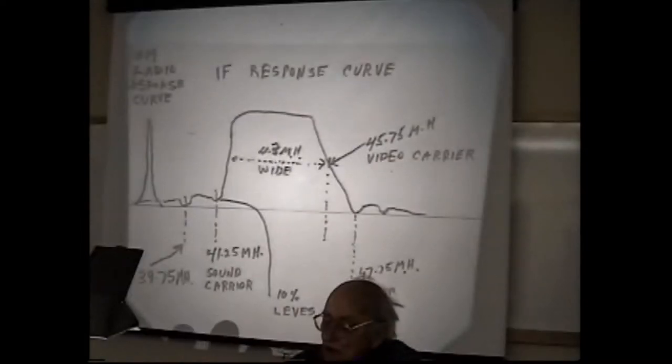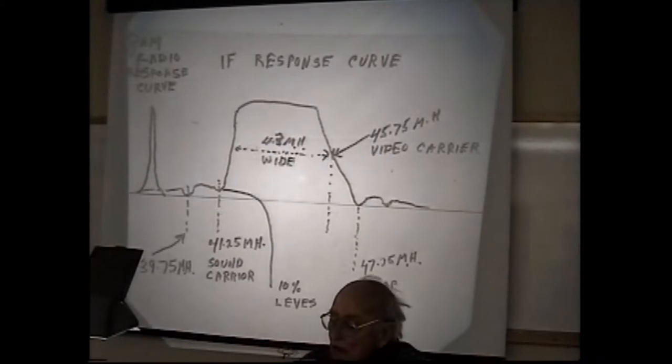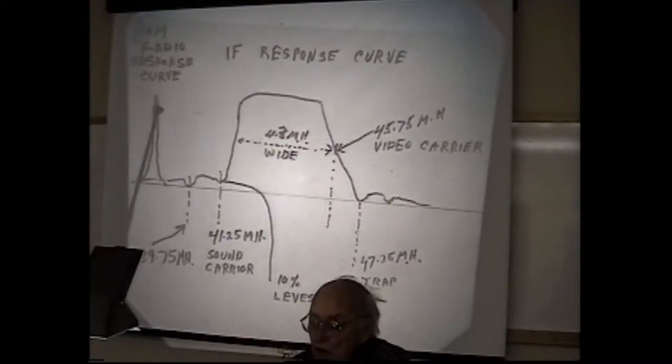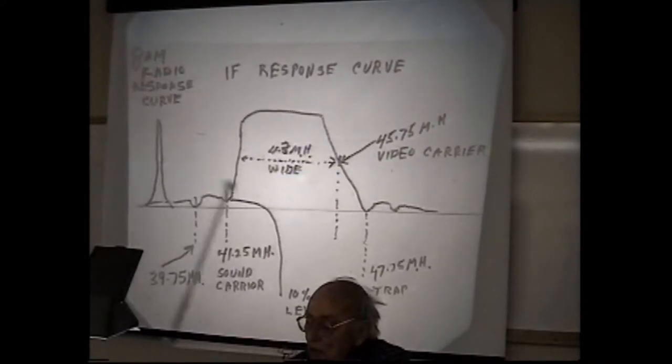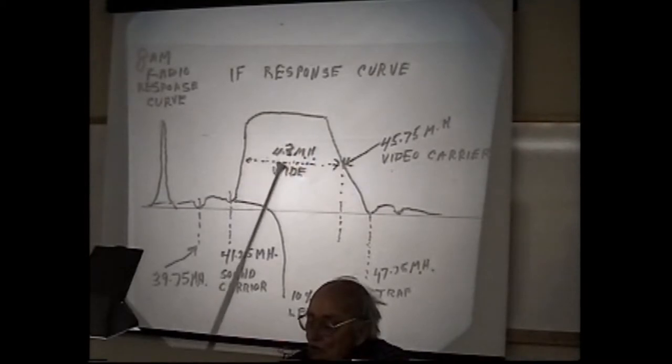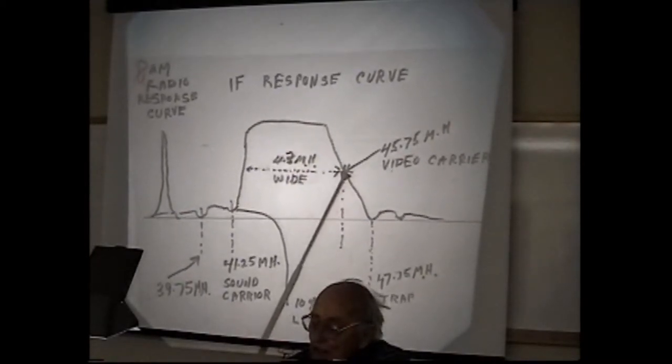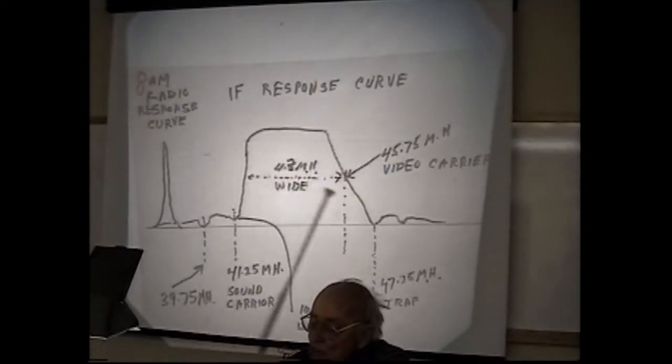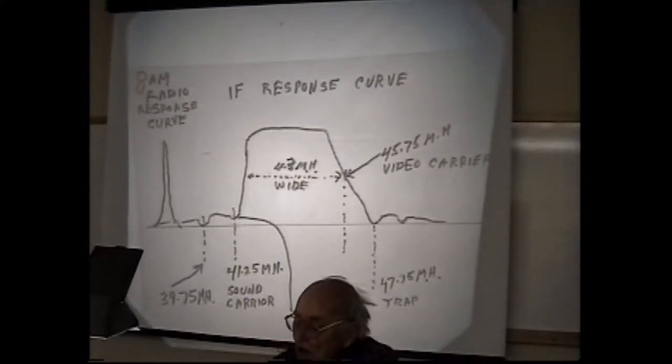I've got one more circuit here and then we'll have some discussion. This is the IF response curve of a TV and a radio. Here's the radio here. Very peaked and very narrow. But the IF response curve on a TV set you'll see is 4.3 megacycles wide at the 50% level. That's from here to here at 50%. It's 4.3 megacycles wide. It's got to handle lots of video frequencies and that takes bandwidth.